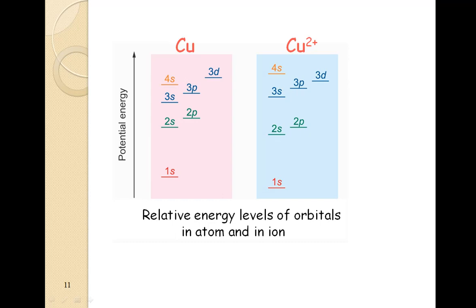Whereas if you write the configuration for copper in plus 2 state, it will be 1S2, 2S2, 2P6, 3S2, 3P6 and 3D9. Here energy of 4s is higher as compared to 3d. So it depends basically upon the nuclear charge. If I explain you Cu plus 2 again, the number of protons remains same those were in Cu, similar are in Cu plus 2. But in plus 2 charge, 2 electrons have lost, so nuclear charge is more. Because of the change in nuclear charge, relative energy levels of the orbitals also change.